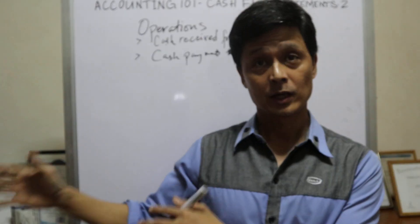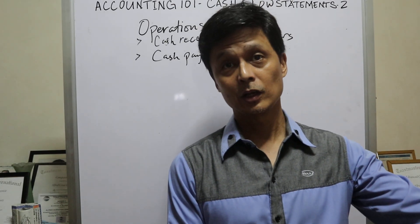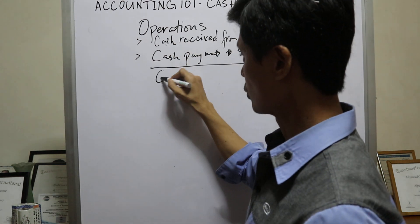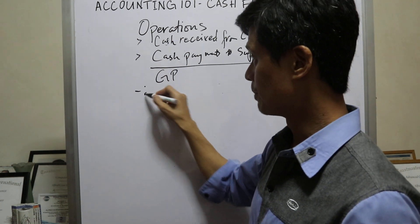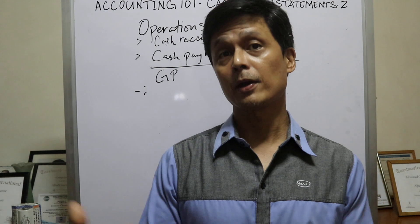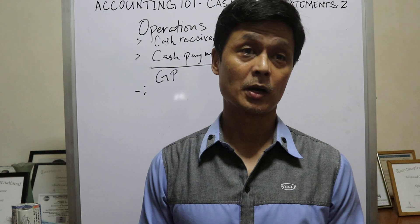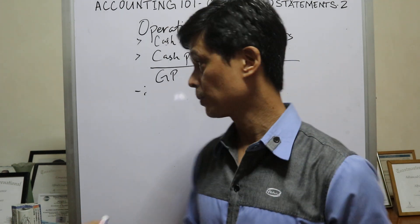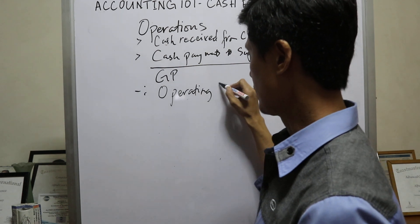Bumili ka ng electric fan, 100 pesos, ibinenta mo ng 200, so meron kang tubo na isandaan. This will be yung gross profit mo. Of course, dun sa gross profit mo, meron ka pang ibabawas dito. Pag nag-operate ka ng grocery, meron kang mga swelduhan, meron kang mga employees, may utilities, may kuryente, at kung ano-ano pa. So kasama yun dun sa operating expenses.